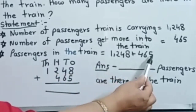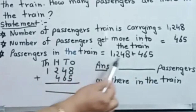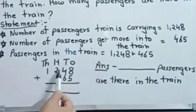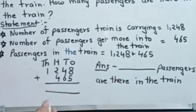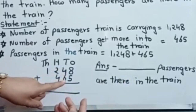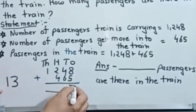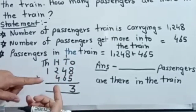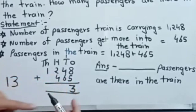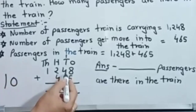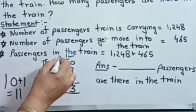Now place under the place value columns: ones, tens, hundreds, thousands. 8 ones, 4 tens, 200, 1,000. Then 5 ones, 6 tens, 400. Count after 8, five numbers: 9, 10, 11, 12, 13 — two-digit number, so 3 here, 1 carry over. Count after 4, six numbers: 5, 6, 7, 8, 9, 10. Two-digit number 10, plus 1 carry is 11. So 1 here, 1 carry over.